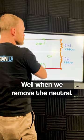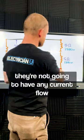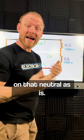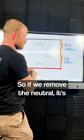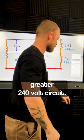Well, when we remove the neutral, it doesn't matter because we see already that because they're balanced, they're not going to have any current flow on that neutral as is. So if we remove the neutral, it's just going to become the greater 240-volt circuit.